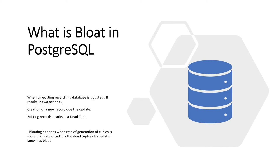Let's take a scenario where an application is trying to update an existing record in a table of a particular database. When an update happens, it does two actions: first it creates a new record which is the result of the update, and the previous value of that particular record still exists in the database or in that table as a dead tuple.